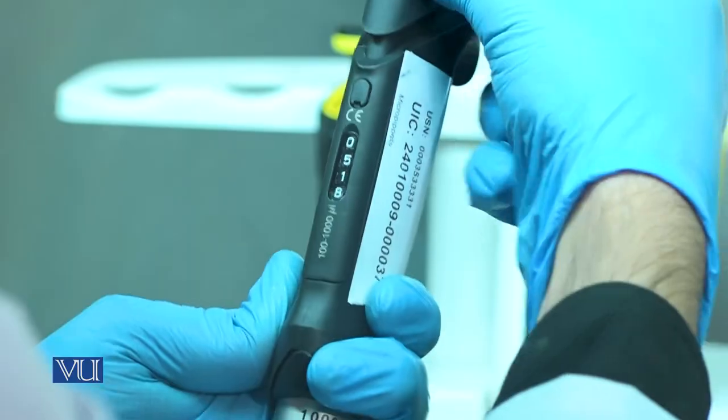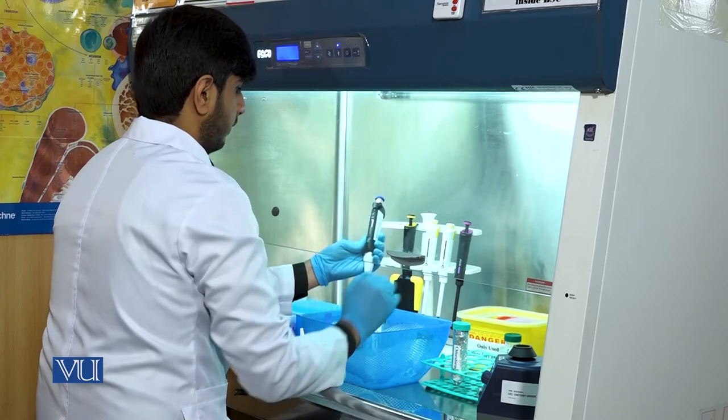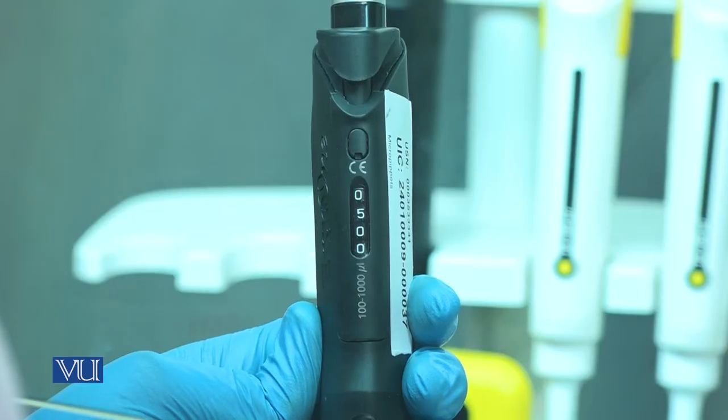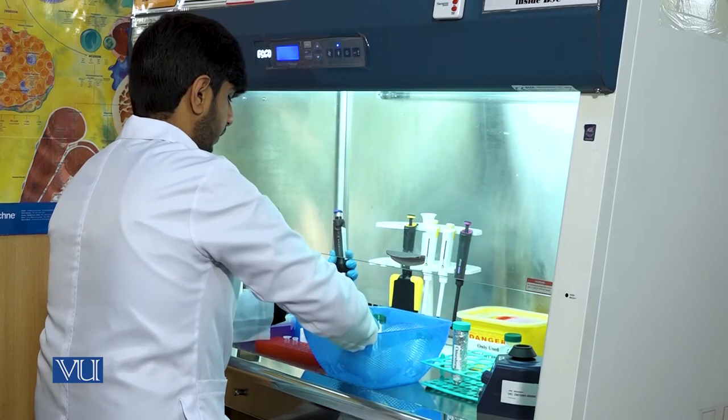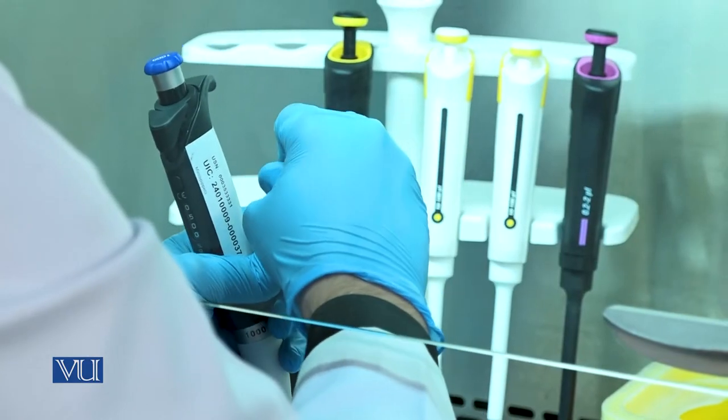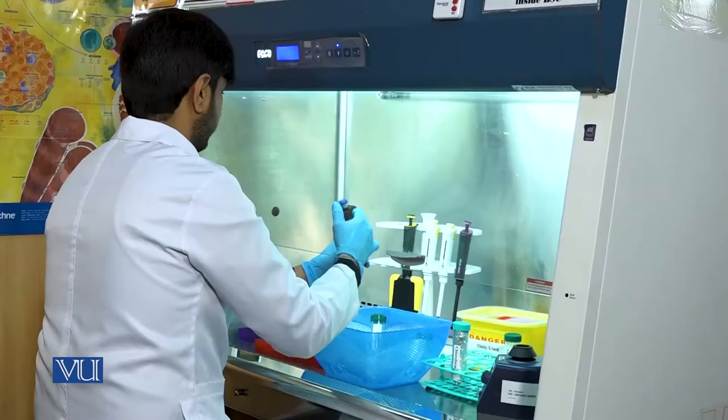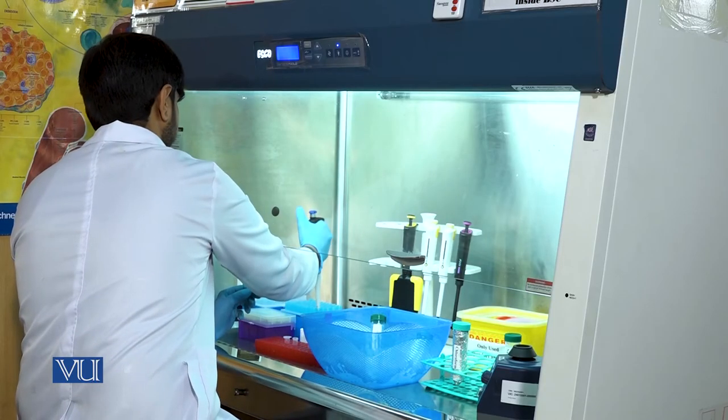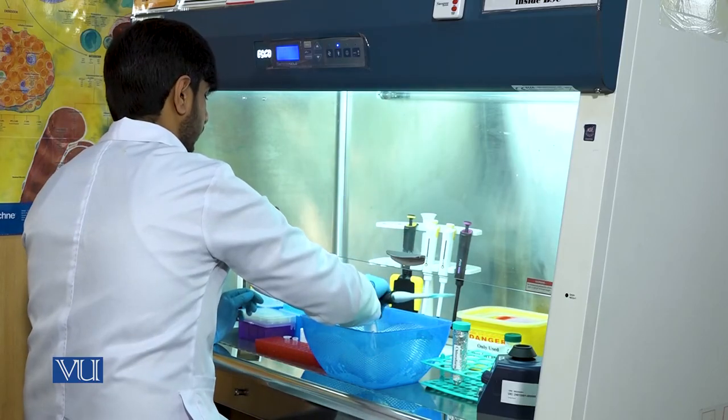After the transfer of aqueous phase to the new eppendorf tube, we will add the equal volume of isopropanol in the eppendorf tube to precipitate the RNA.